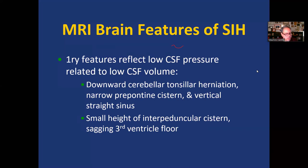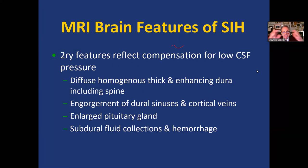What are the imaging features of intracranial hypotension? The features reflect the loss of CSF volume and low pressure. There is downward herniation of the cerebellar tonsils, the prepontine cistern becomes narrow, the straight sinus becomes vertical, there is decreased height of the interpeduncular cistern, and the floor of the third ventricle sags down, resulting in a small suprasellar cistern. Secondary signs due to compensation include thickened and enhancing dura throughout the intracranial compartment, engorgement of dural sinuses and cortical veins, enlarged pituitary gland, and subdural fluid collections — which may be sterile or hemorrhagic if a bridging vein has torn.